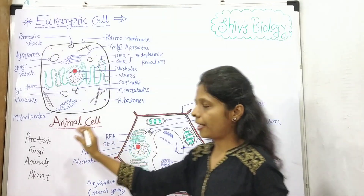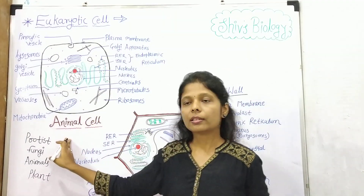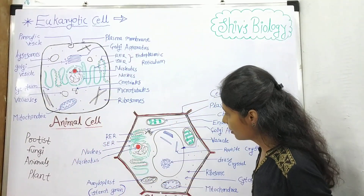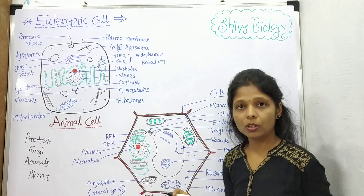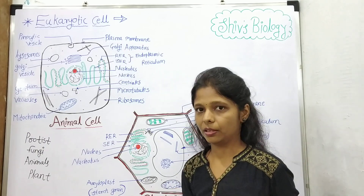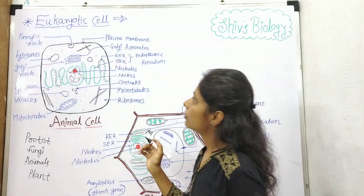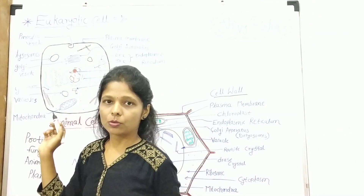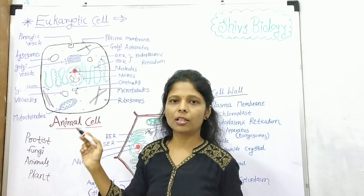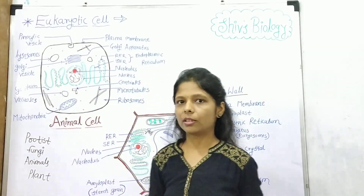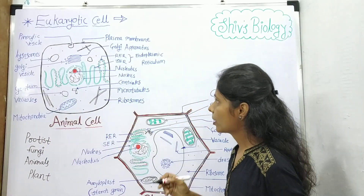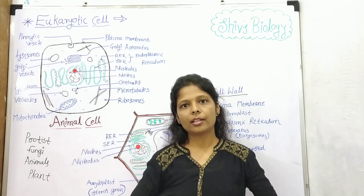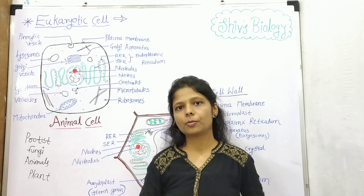In animal cells, vacuoles are temporary, and in plant cells, vacuoles are permanent. Then the lysosomes — lysosomes are helpful in digestion. Then chloroplast and mitochondria — they are helpful in energy metabolism.